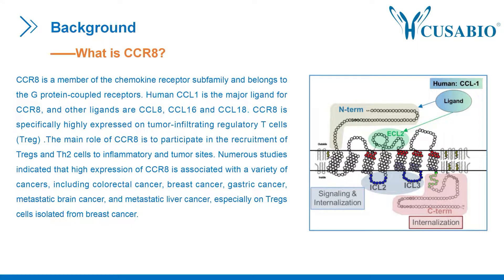CCR8 is a chemokine receptor that is specifically highly expressed on tumor-infiltrating regulatory T-cells, but is basically not expressed on peripheral blood Tregs or normal tissues. It is a G-protein coupled receptor. Human CCR8 has four known ligands: CCL1, CCL8, CCL16, and CCL18, while in mice there are only three: CCL1, CCL8, and CCL16. In humans and mice, CCR8 is the only known receptor for CCL1, while other CCR8 ligands bind multiple chemokine receptors as well as decoy receptors.